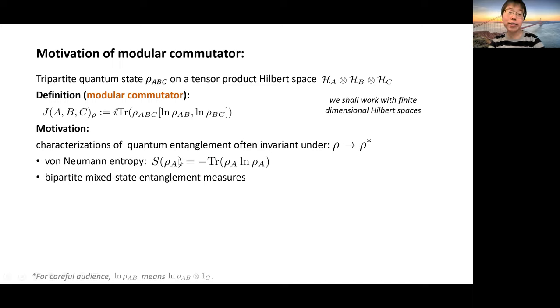In this first slide, I would like to tell you the definition of a modular commutator and provide one motivation on why we consider this. Consider the tripartite quantum state ρ_ABC on a tensor product Hilbert space. The tensor factors in the Hilbert space A, B, and C are assumed to be finite-dimensional. One motivation is the following. When thinking about quantum entanglement, the first thing people think about is probably the von Neumann entropy, which is the measure for entanglement of a bipartite pure state.